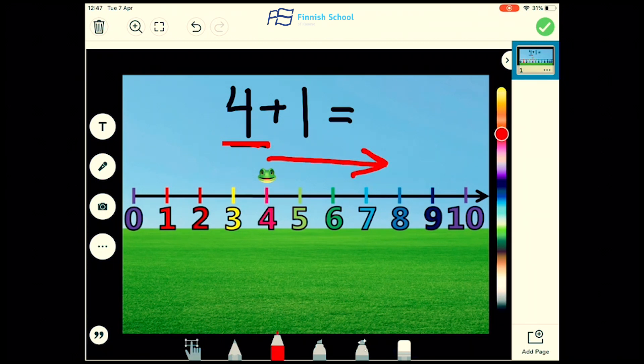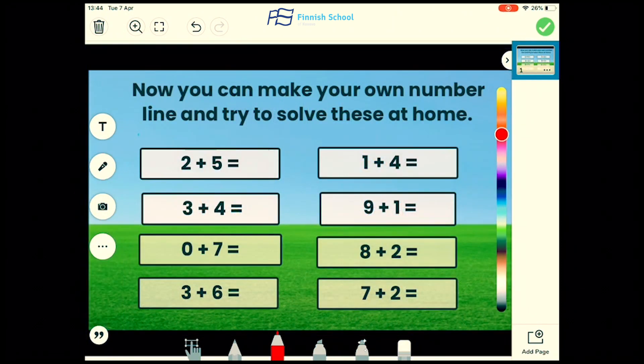So now you can make your own number line and try to solve these at home. The first one is 2 plus 5, 3 plus 4, 0 plus 7, 3 plus 6, 1 plus 4, 9 plus 1, 8 plus 2, and 7 plus 2.